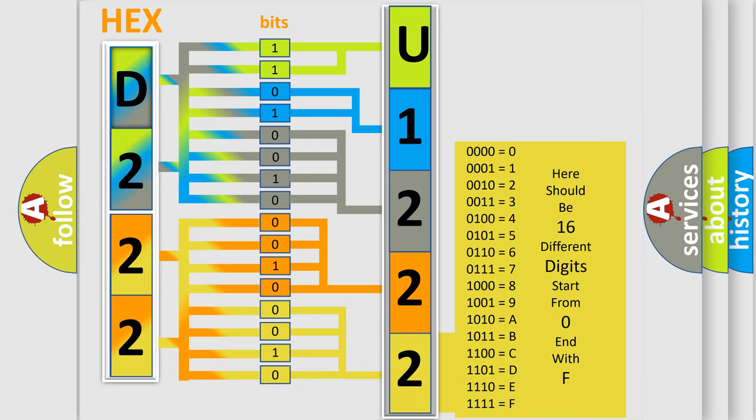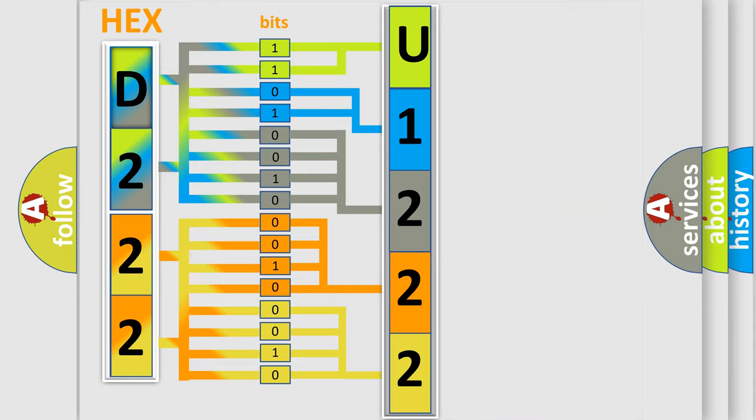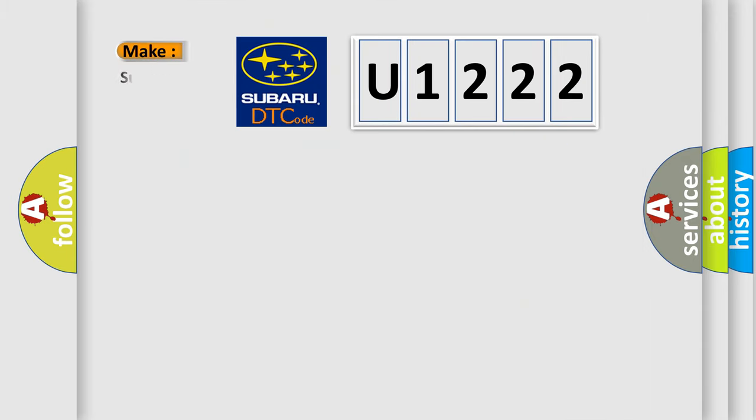We now know in what way the diagnostic tool translates the received information into a more comprehensible format. The number itself does not make sense to us if we cannot assign information about what it actually expresses. So, what does the diagnostic trouble code U1222 interpret specifically for Subaru car manufacturers?